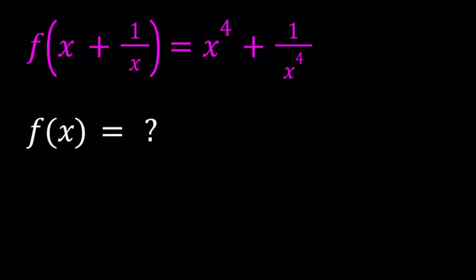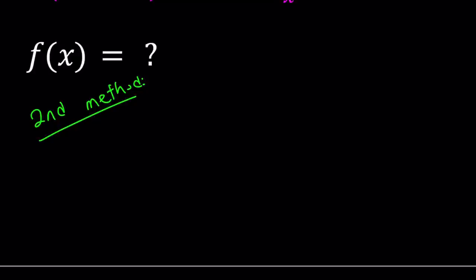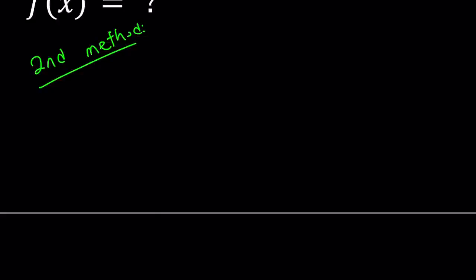I'll be presenting two methods and let's start with the second one. For my second method, I'm going to do the following. Since I'm looking for f of something like a single variable, I want to set this equal to another variable. So let's go ahead and set x plus 1 over x equal to z.